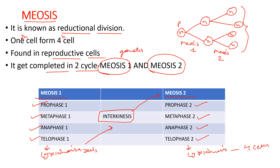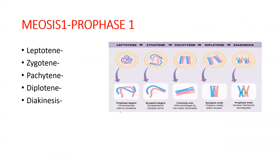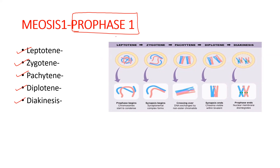Meiosis two also has four stages: prophase two, metaphase two, anaphase two, and telophase two, followed by cytokinesis, after which four cells are formed. Now we will learn about meiosis one. The first stage is prophase one, which is the most complicated and lengthy process.